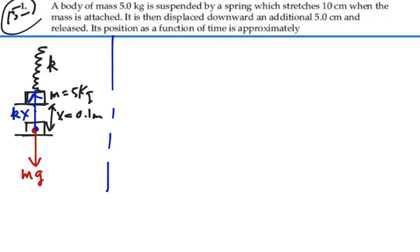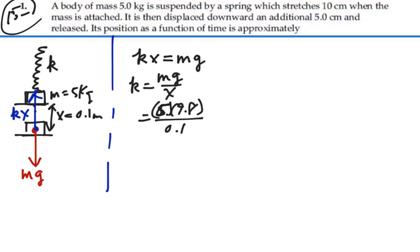We can use that idea to figure out what the k constant is, because it should be true that kx is equal to mg if we're in equilibrium. So that means that our k is going to equal mg divided by x, and that's going to be 5 kilograms times 9.8 divided by 0.1. So that's 49 divided by 0.1, or 490 newtons per meter.